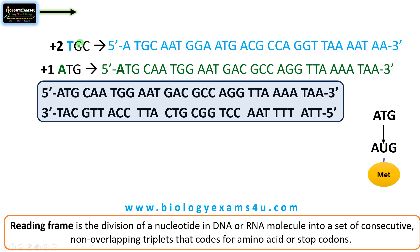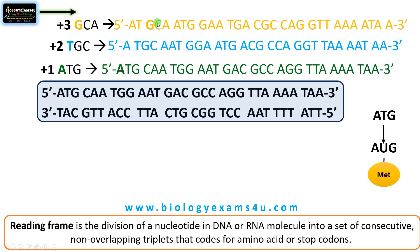The plus three frame begins with the third nucleotide G, giving triplets GCA, ATG, GA, and so on. So for a single strand there are three reading frames: plus one, plus two, and plus three.